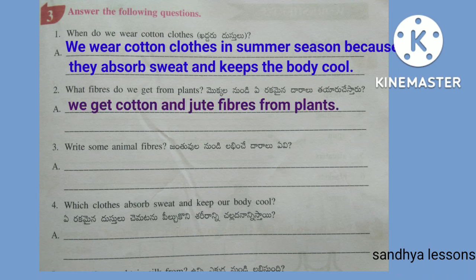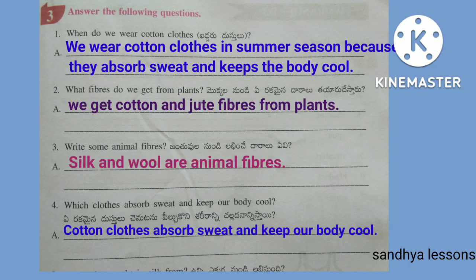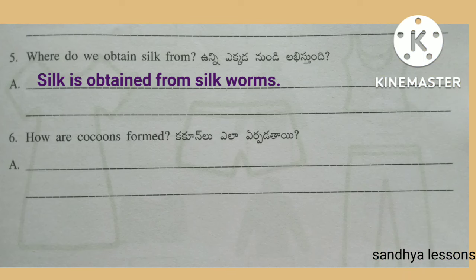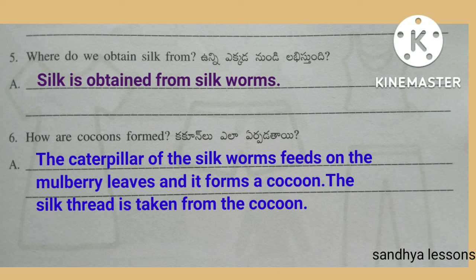Third, answer the following questions. When do we wear cotton clothes? We wear cotton clothes in summer season because they absorb sweat and keep the body cool. What fibers do we get from plants? We get cotton and jute fibers from plants. Write some animal fibers: silk and wool are animal fibers. Which clothes absorb sweat and keep our body cool? Cotton clothes absorb sweat and keep our body cool. Where do we obtain silk from? Silk is obtained from silkworms.